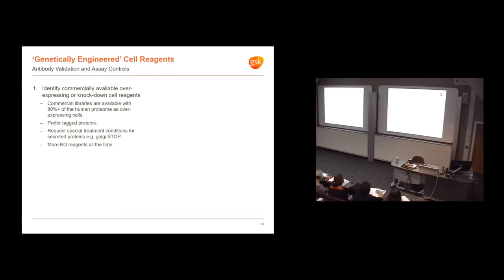For a while, we were thinking about getting genetically engineered cell reagents generated bespoke. We then found commercially available suppliers who have 80% of the proteome available as overexpressing cells. We can rapidly get these cells off the shelf, tagged with a tag, with special treatment conditions for secreted proteins to keep the protein in the cell. There are also many more knockout reagents off the shelf, so we don't have to find resources to make them ourselves, which has been a great boon.